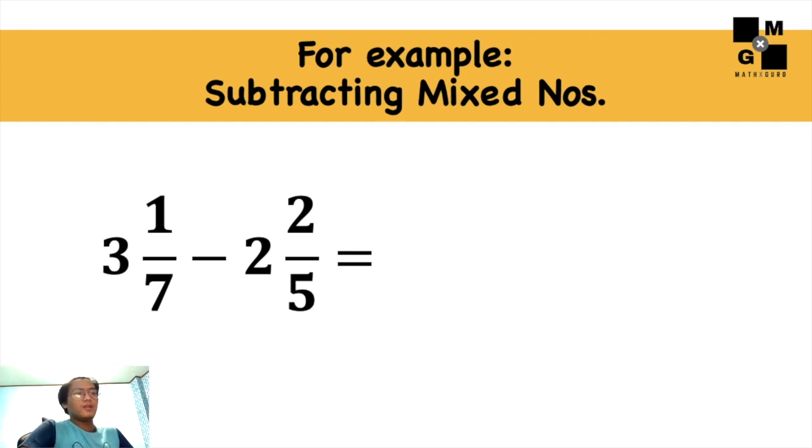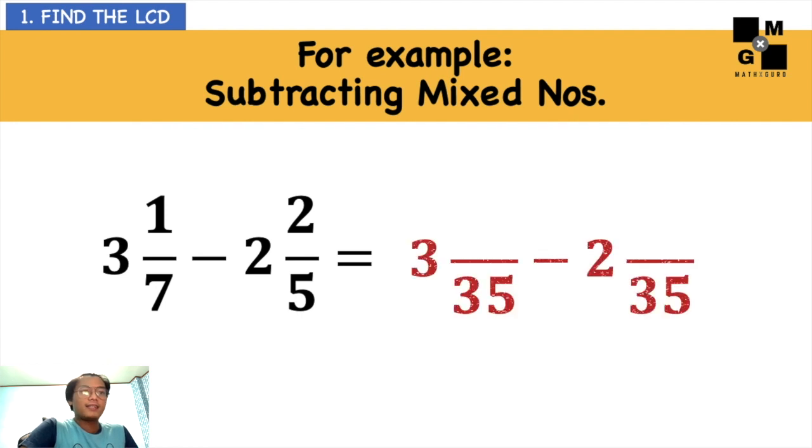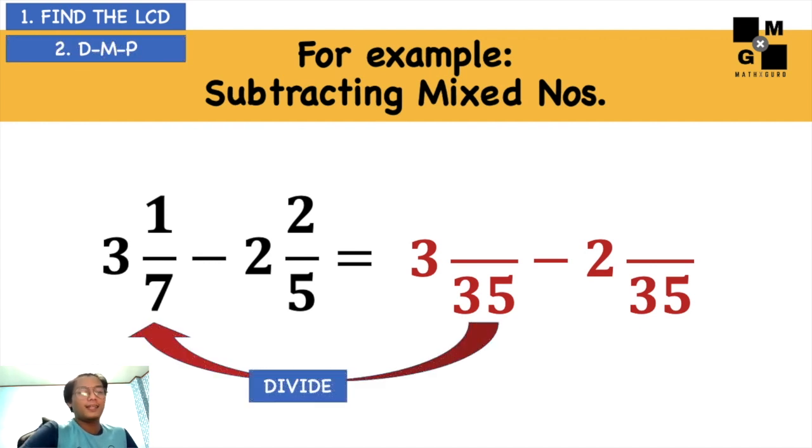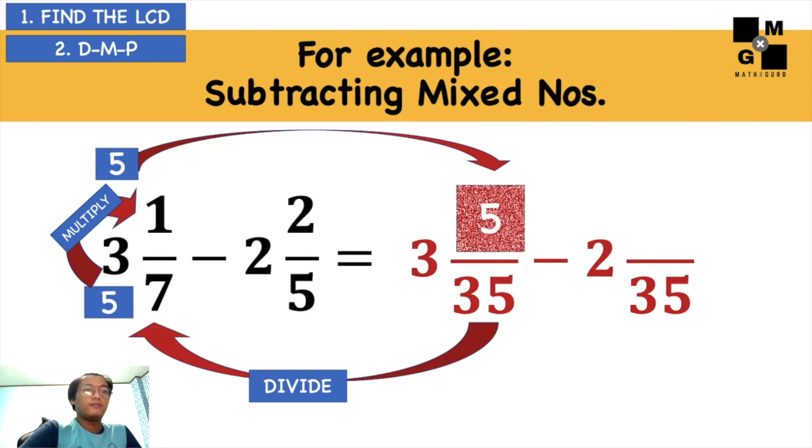How about this one? 3 and 1/7 minus 2 and 2/5. The same thing: we will find the LCD. So we'll have 35. And just like what I said again, we can just copy the whole numbers because we will not use it yet. So 35 divided by 7 in applying the DMP, that will give us 5. 5 times 1 will give us 5, and then put 5 in.